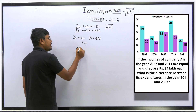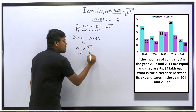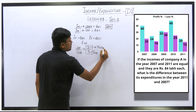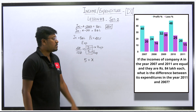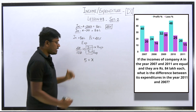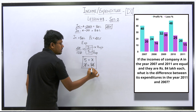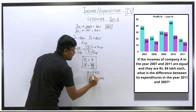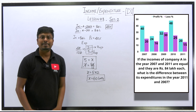The base value is expenditure (5 parts) and profit is 2 parts, so income equals 5 plus 2 equals 7 parts. Seven parts equals 84 lakh, so one part equals 12 lakh. Expenditure is 5 parts, so x equals 5 into 12 equals 60 lakh. Therefore, expenditure of company A in the year 2007 is 60 lakh.